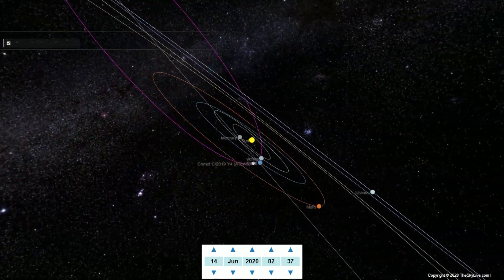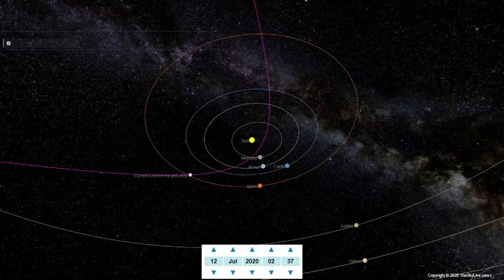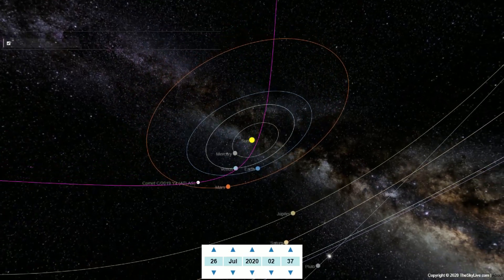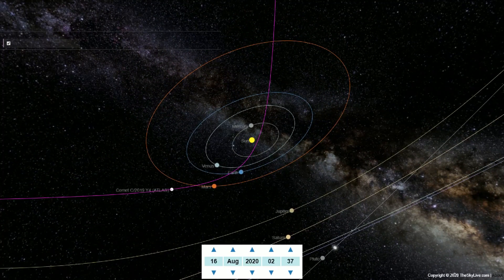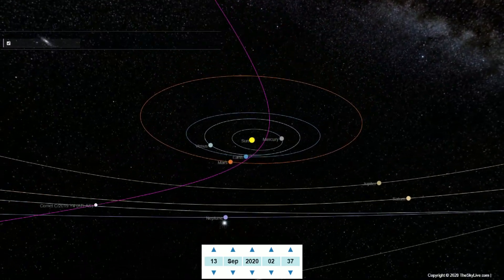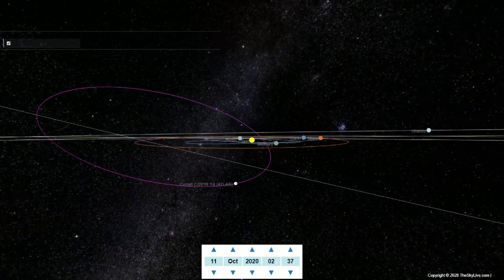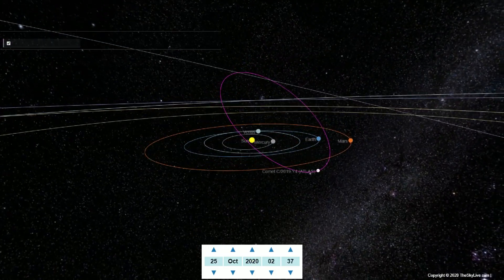The first orbital calculations for C-2019 Y-4 were published on the Minor Planet Electronic Circular based on observations taken between December 28, 2019, and January 9, 2020, indicating a 4,400-year orbital period and a perihelion of 0.25 astronomical units.